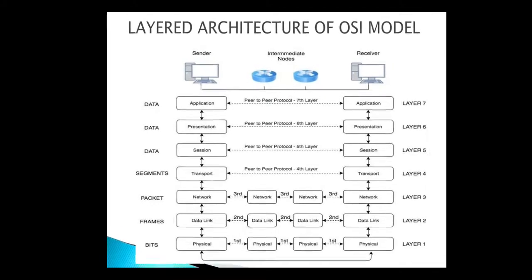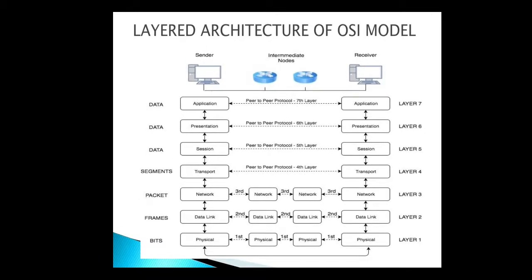In the layered architecture of the OSI model, at the first three topmost layers, the information is called data. At the transport layer, large data is divided into segments — small parts. At the network layer, these segments become packets because the router adds the IP address to each packet. At the data link layer, it adds the hardware address of the device — that is, the MAC address — so here it is called frames. At the physical layer, data is converted into bits — zeros and ones — and through the transmission media, it is transmitted from sender to receiver.